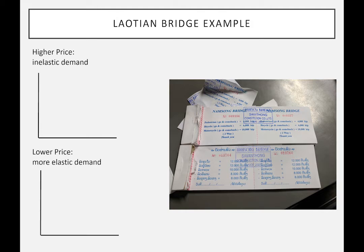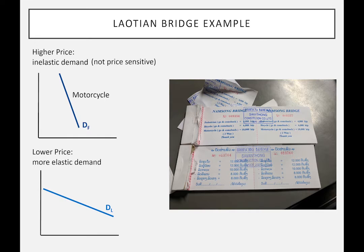Let's look at a simple example I noticed while traveling in Southeast Asia. We have the foreign group with a relatively inelastic demand curve — so we'd expect them to pay a higher price (demand curve DF) — and the local group with a more elastic demand (DL) charged a lower price. This was a bridge crossing ticket in Laos: pedestrians paid 400 kip, while motorcycle riders paid about 10,000 kip — roughly twice as much. This illustrates that sellers don't need sophisticated economics knowledge to understand and practice price discrimination.